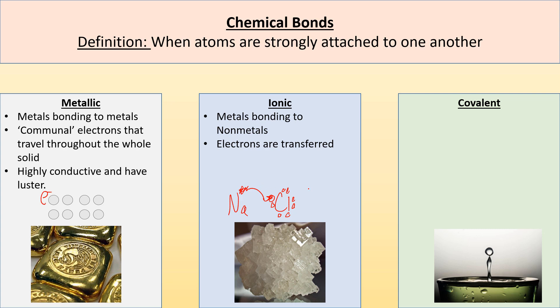And because electrons are negatively charged, the chlorine becomes negatively charged and the sodium becomes positively charged. Now those opposite charges attract to each other, so opposites attract, and that's the electrostatic attraction. That's ionic bonding in a nutshell.